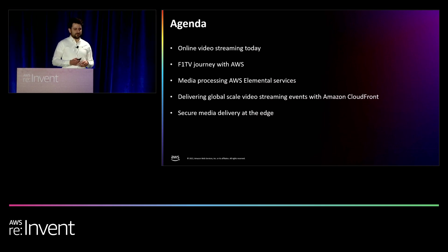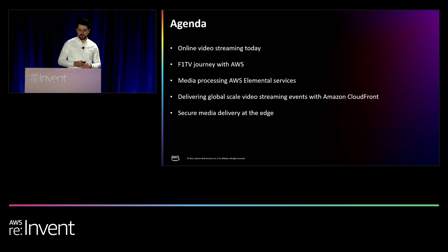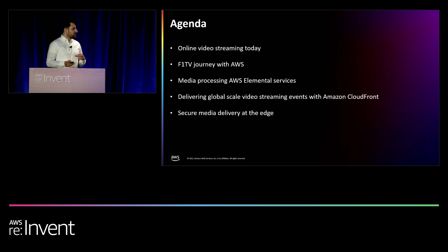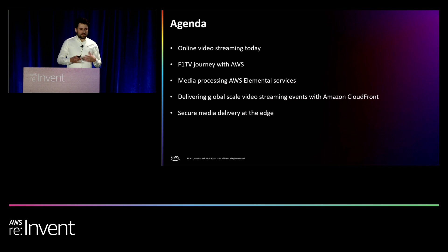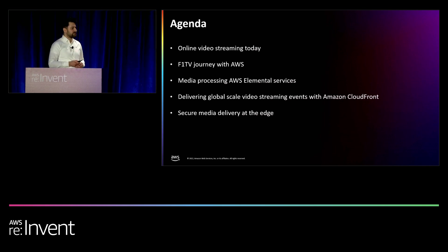We'll start off with a bird's-eye view on over-the-top delivery — what are the trends and key building blocks in the realm of internet-scale delivery. Then we'll invite James on stage to walk us through the key considerations for Formula One as they were architecting their platform, and what services and features allowed them to achieve the desired outcomes. That will frame the rest of the talk, in which Nicolas and I will unpack those services and features.